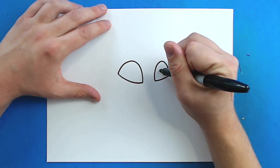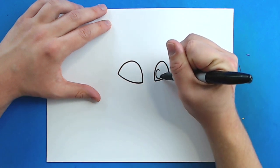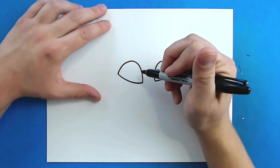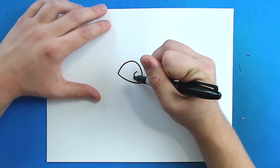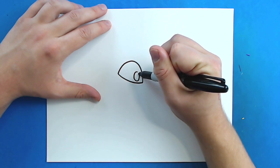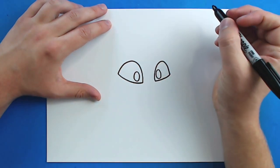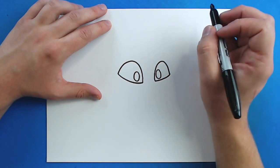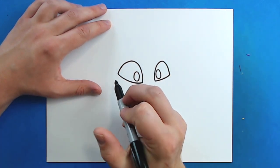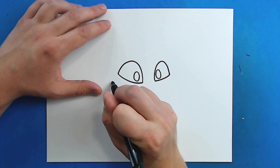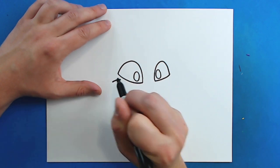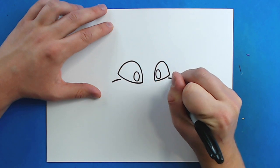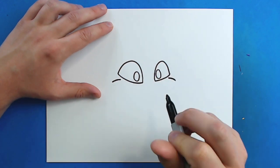Then starting right here I'm going to make a tall oval like this. And then I'm going to make another tall oval right here. Now for the mouth — starting right here I'm going to put a little curved line really close to the eye. And then I'm gonna put another one right here. That's gonna show how far apart my mouth is gonna be.